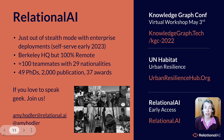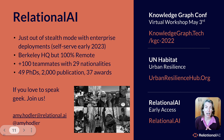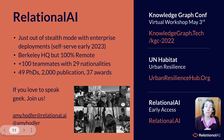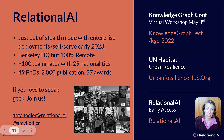If you haven't heard of Relational AI, we've just come out of stealth with several enterprise deployments. We have headquarters in Berkeley but are 100% remote, with about 100 team members across 29 nationalities, and a lot of academic publications and awards we're very proud of. If you're interested in joining a team that loves to speak geek, reach out to me or find us at relational.ai. For a virtual workshop where you can get hands-on with these models, visit the Knowledge Graph Conference on May 3rd at knowledgegraph.tech. For more on UN Habitat and the urban resilience hub, go to urbanresiliencehub.org, and for early access to Relational AI, check out relational.ai.